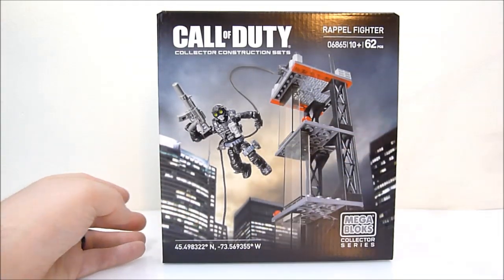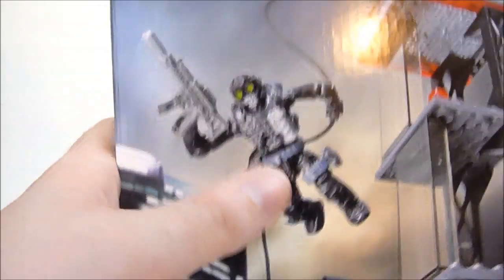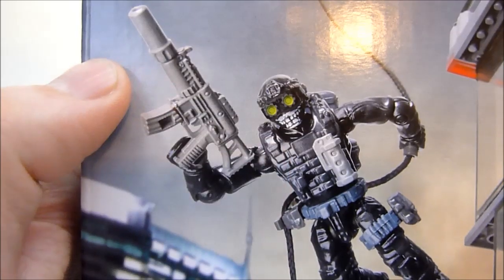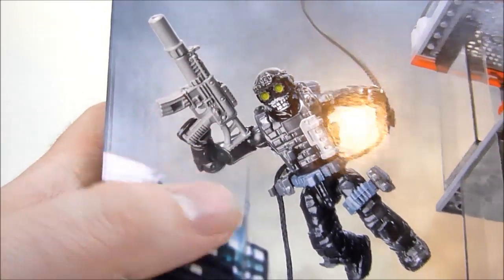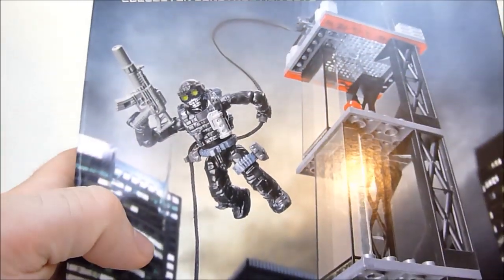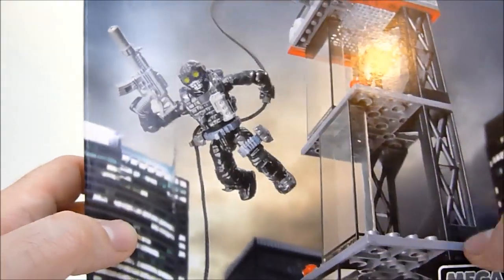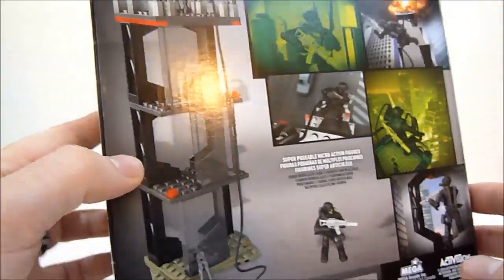There you go, it's a big box but as you can see you get a repel fighter in a crazy mask going on there, a little skull mask, and he's got a weapon and he's got a rope and he's jumping and repelling and there's a sort of building. It's neat.